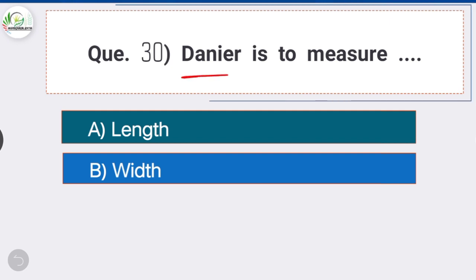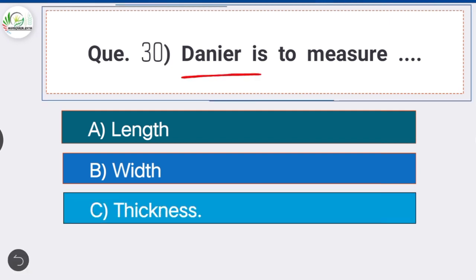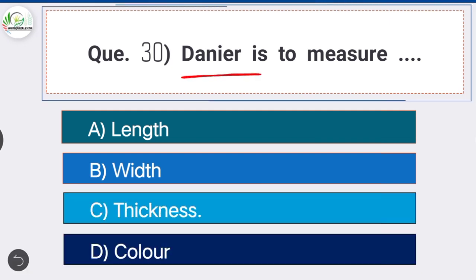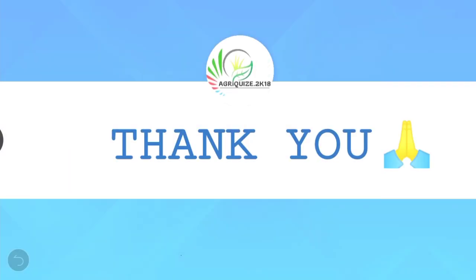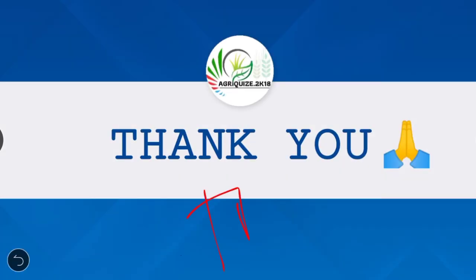Question 30: Denier is used to measure Option C, the correct answer: thickness. The thickness of the silk filament of a cocoon is measured in denier. Thank you friends for watching our video. Please like, share, and subscribe to our YouTube channel for more videos.